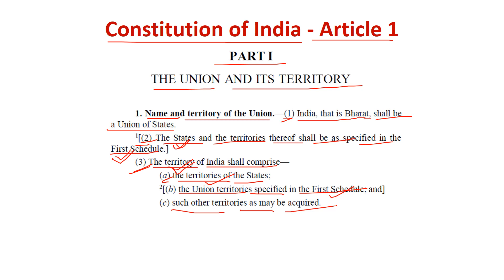So Article 1 deals with the name and territory of the union, which is India, that is Bharat, and shall be a union of states. The states and territory thereof are specified in the First Schedule. The territory of India shall comprise the territory of states, the union territories specified in the First Schedule, and such other territory as may be acquired.